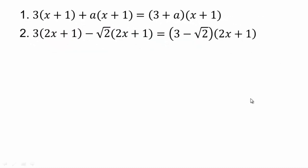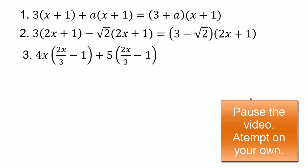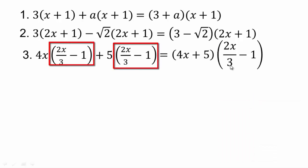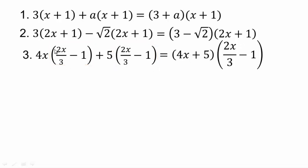Try this next one on your own — pause the video and try. So 2x over 3 minus 1 is the greatest common factor and you're left with 4x plus 5. Or, thinking of it as adding like terms works also.